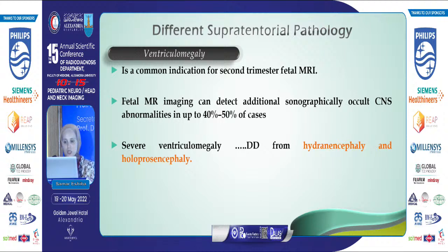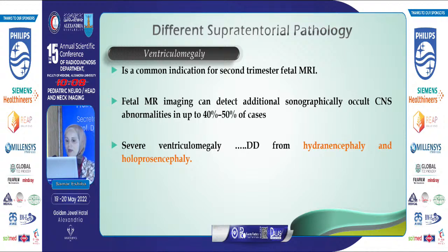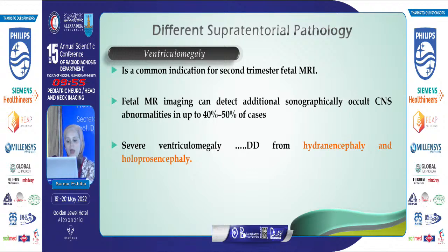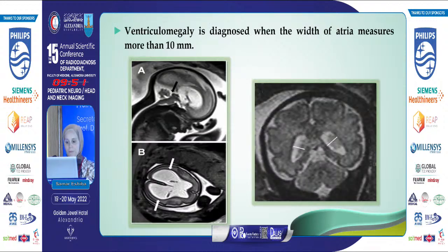The main supratentorial pathologies include ventriculomegaly, which is the most common indication for second trimester fetal MRI, as fetal MRI can detect additional sonographically occult CNS abnormalities in about 40 to 50% of cases. Fetal MRI helps differentiate severe ventriculomegaly from other diseases like hydranencephaly and holoprosencephaly. Ventriculomegaly is diagnosed when the width of the atrium is more than 10 mm.